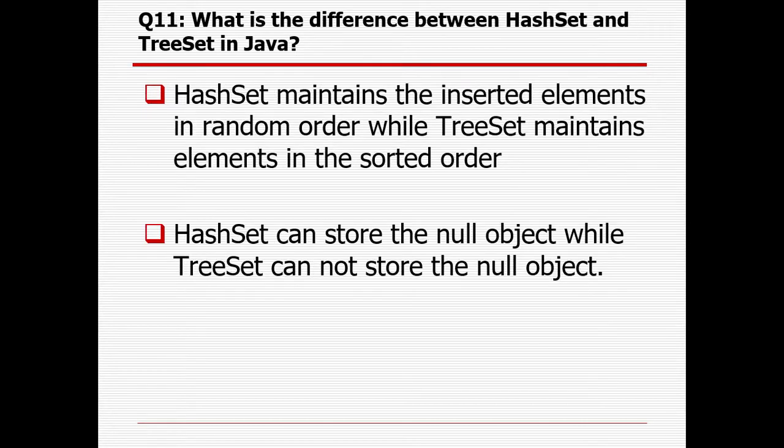What is the difference between HashSet and TreeSet? HashSet maintains inserted elements in random order — it retrieves in random order. Whereas TreeSet maintains elements in ascending sorted order, so you can get elements in ascending order. HashSet can store a null object, while TreeSet cannot store a null object.